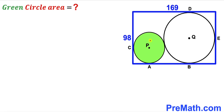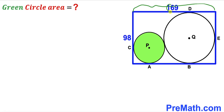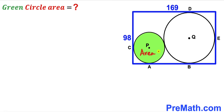Welcome to pre-math. In this video we have got two circles with centers P and Q fully inscribed in a blue rectangle, as you can see in the given diagram, such that the two circles are tangent to each other. The length of this blue rectangle is 169 units whereas the width is 98 units, and our task is to calculate the area of the green shaded circle.